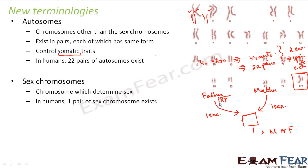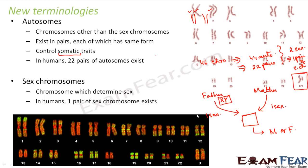In a female, there are also 22 pairs of autosomes, and the last pair — the sex chromosome — is denoted by XX. So in a male the sex chromosome is XY, and in a female it is XX.